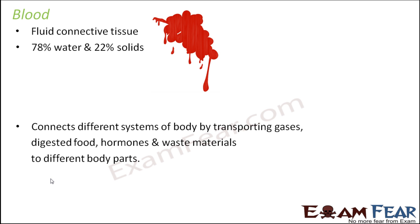For example, during digestion the food is absorbed by the intestine, but that food is needed by all other cells of the body — blood carries it to different parts. Waste materials are produced in each and every cell of the body; blood collects them and transports them to the kidneys for excretion. Transportation of hormones is also done by blood. So blood is basically connecting different body parts, which is why it falls under the category of connective tissue.